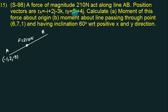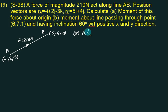The coordinate of point B is 5, 4, 0. For part A, we want to find out the moment of this force about point O, which is the origin with coordinate 0, 0, 0.